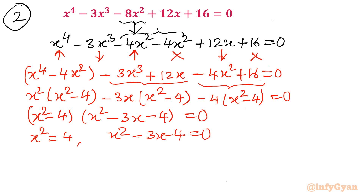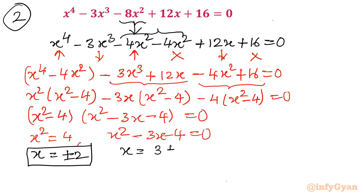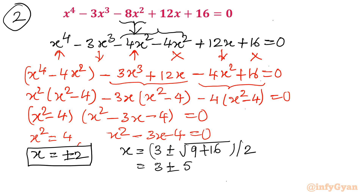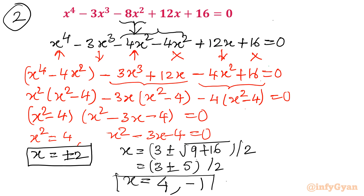From x squared minus 4 equals 0, taking the square root of both sides gives x equals plus or minus 2. For x squared minus 3x minus 4 equals 0, applying the quadratic formula gives x equals 3 plus or minus the square root of 9 plus 16, all over 2, which is 3 plus or minus 5 over 2. Taking the plus sign gives 8 over 2 equals 4; taking the minus sign gives negative 2 over 2 equals negative 1.